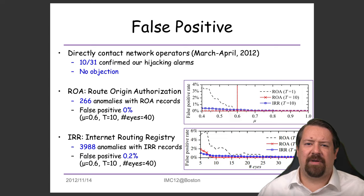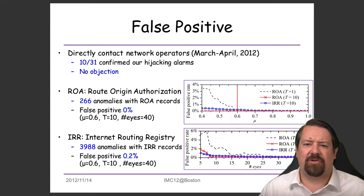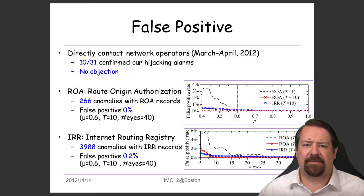They also compared results with route origin authorization, an attempt to create a database specifying which origins are allowed to advertise which prefixes. Out of all anomalies observed, only 266 had a record in this database, but there were no false positives identified against it. Based on internet routing registry records, there were almost 4,000 anomalies with IRR records, of which about 0.2% were indicated to be false positives, although those records may be out of date.